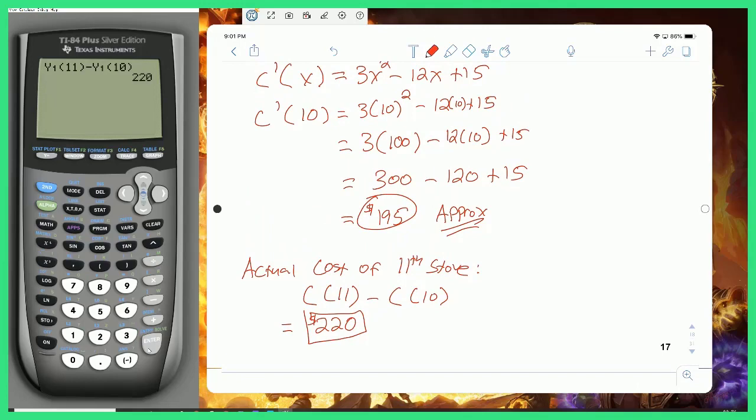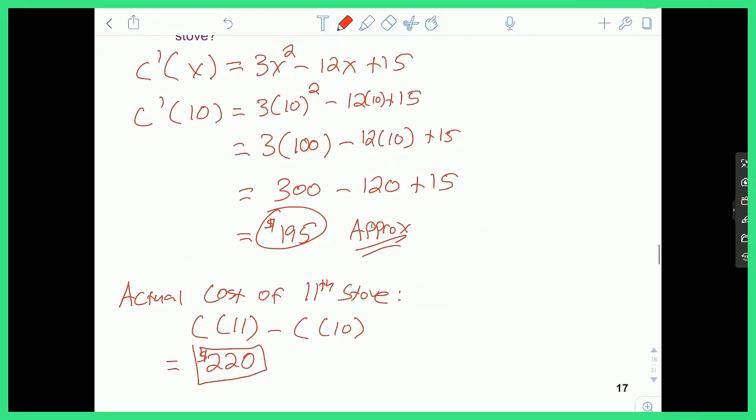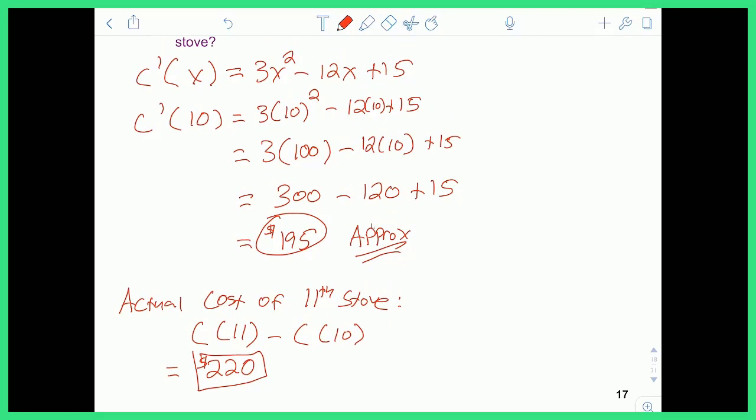So this is the actual value of the 11th stove versus the approximation of $195. So you may ask yourself, okay, well, it's close, but what is the purpose for this? Why does this exist if we can just go and calculate the actual cost?